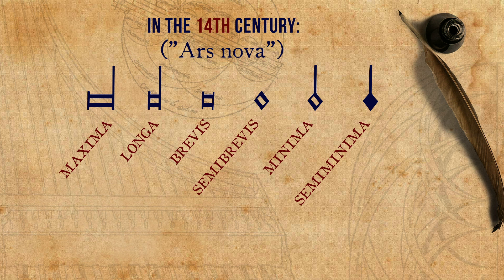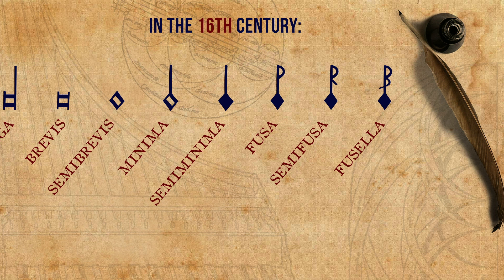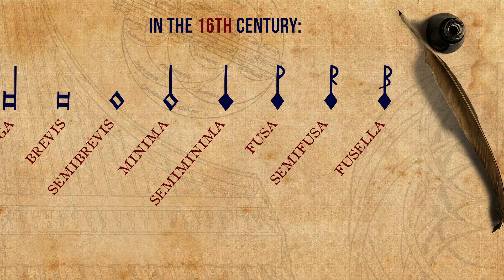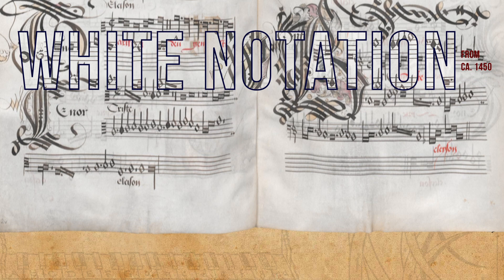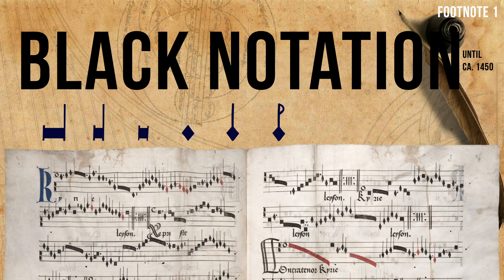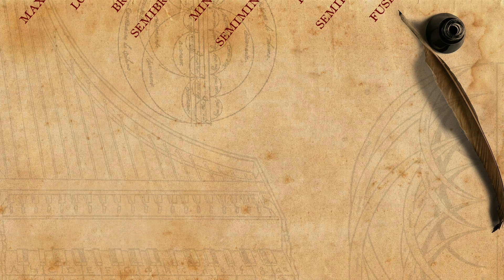The minima, despite its name, is not the shortest value in the system. However, until the middle of the 16th century, it was the shortest value that could carry its own text syllable. A note value longer than the longa — which was also the longest — is the maxima, hence its name. In the end of the 15th century, notes shorter than the semi-minima were introduced: fusa and semi-fusa. Lastly, in the 16th century, an even shorter note value was introduced, the fusela. These graphical representations are according to the so-called white notation, using hollow note shapes, used from roughly the middle of the 15th century. Before that, with the so-called black notation, all notes were filled in. From now on I will refer to their English names: long, breve, semi-breve, etc.